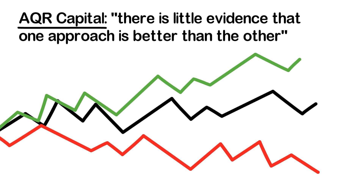This is supported by the myriad examples of highly successful discretionary and systematic traders. A good discretionary trader can easily outperform a poorly developed trading algorithm, but so can a good systematic trader.